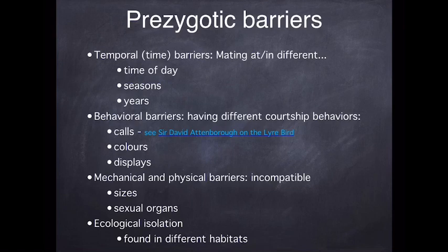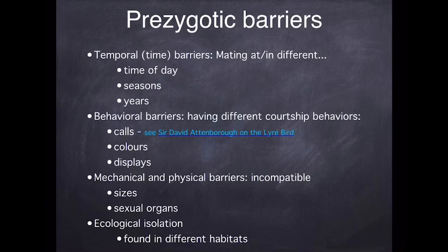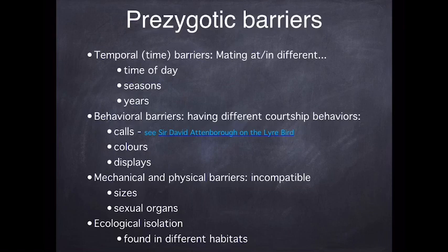Behavioral barriers relate to courtship behaviors. For example, the particular mating call that a bird uses — I'd recommend looking up Sir David Attenborough's video on the lyrebird (spelled L-Y-R-E). The lyrebird is a phenomenal bird that can mimic all sorts of sounds, and the more varied its call, the more attractive it is to its mate. Similarly, there is a particular whale with a mutation causing it to vocalize at a different frequency and pitch to others of its species — it's been called 'the lonely whale' — and the likelihood is it will never find a mate because its vocalization is in the wrong frequency range.